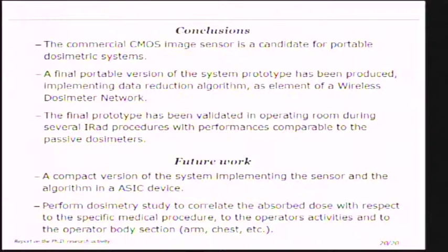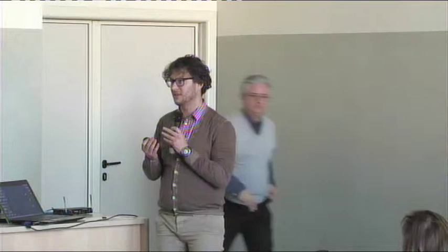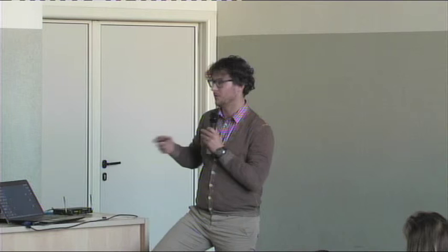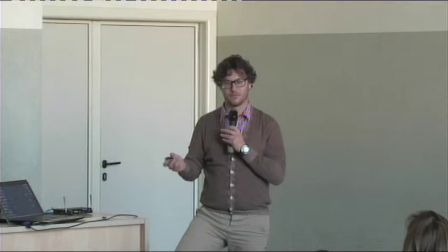In conclusion, regarding the main activity: the commercial CMOS image sensor is a suitable candidate for a portable dosimetric system. The final prototype has been produced as part of a wireless dosimeter network and validated in the operating room during several interventional radiology procedures, with performances comparable to passive dosimeters. As future works, a compact version could be designed by integrating both the sensor and the algorithm into an ASIC to reduce dimensions. Also, systematic studies can be performed to correlate the absorbed dose with respect to operator activity, different parts of the body, and different types of medical procedures. This is a list of scientific publications divided into journals and international conferences. Thank you for your attention.